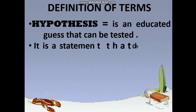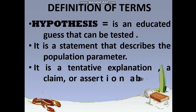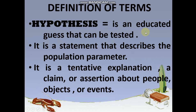The first term is hypothesis. When we talk about hypothesis, it is an educated guess that can be tested — meaning there is a process before we accept it, and there is a reason behind this guess. It is also a statement that describes the population parameter. We've already discussed parameter as something that describes the population. It is also a tentative explanation, a claim, or assertion about people, objects, or events.